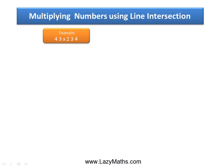Here's another example of multiplying numbers using line intersection: 43 times 234.